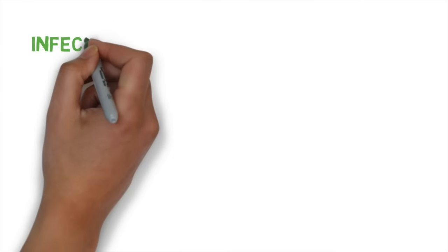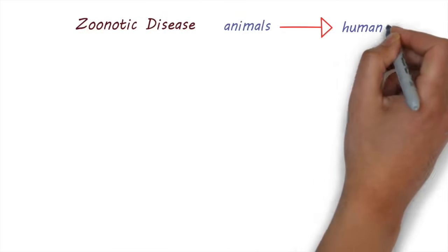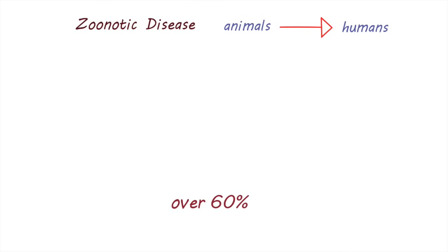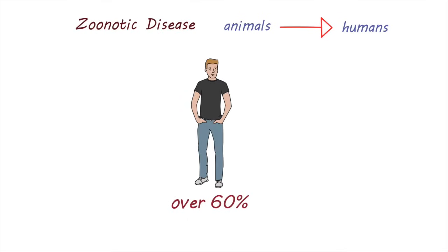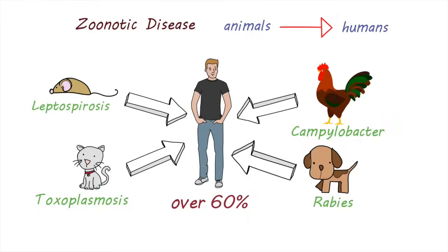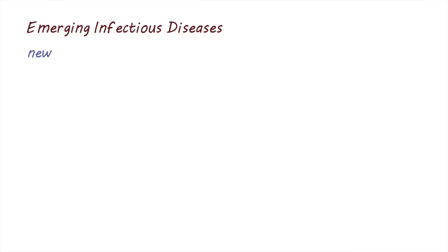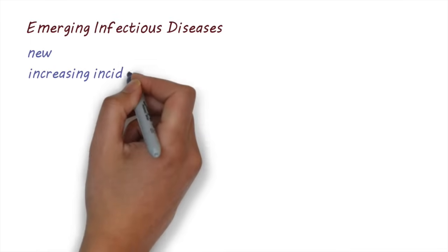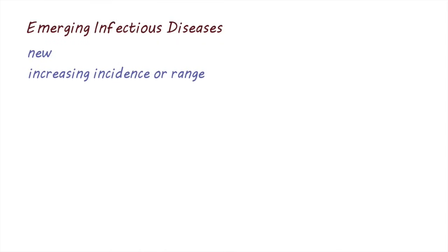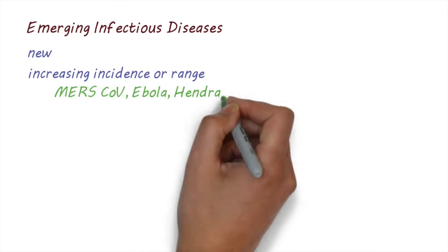Now let's have a look at some important categories of infectious diseases. Zoonotic diseases are diseases of animals which, when transmitted to humans, can cause disease. It is estimated that over 60% of human infectious diseases are zoonotic. Examples include leptospirosis, toxoplasmosis, campylobacter, and rabies. An emerging infectious disease is a disease that has appeared in the population for the first time, or one that may have existed previously but is rapidly increasing in incidence or geographical range. Examples include MERS-CoV, Ebola, Hendra, and new influenza strains.